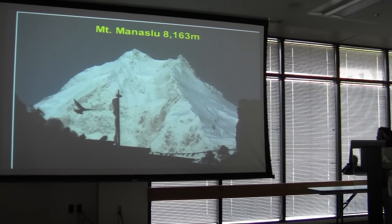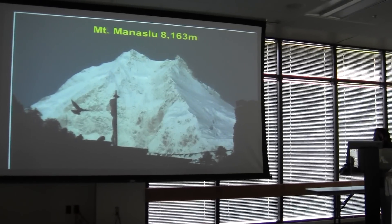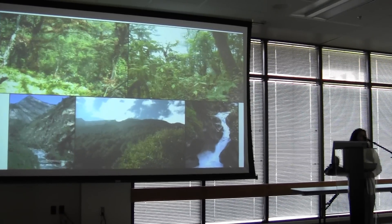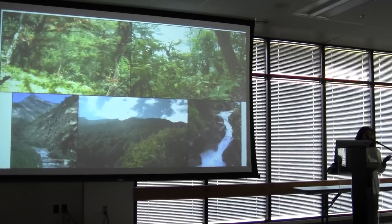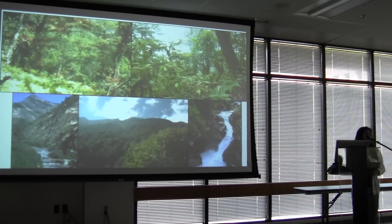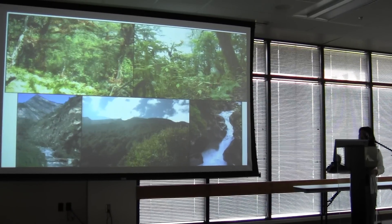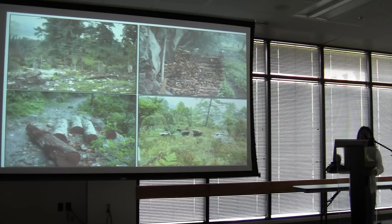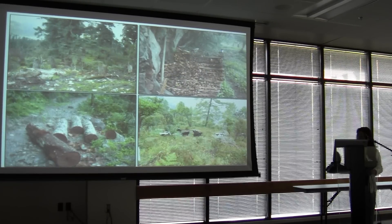The metrics for biodiversity used by major conservation institutions such as Conservation International and WWF are based on species richness, endemism, and the threatened status from anthropogenic activities such as excessive logging and unsustainable farming practices.